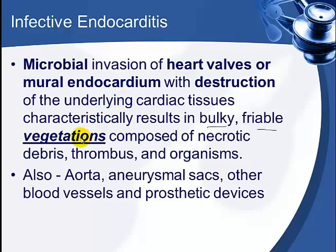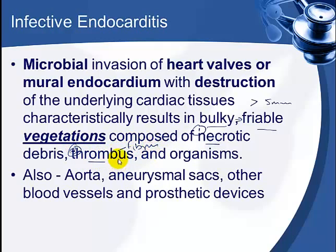Along with destruction, they lead to formation of big, bulky, friable vegetations. When we say bulky, they are generally more than five millimeters in diameter. If a vegetation is more than five millimeters, it is more likely to be infective. These bulky vegetations are friable and mainly composed of necrotic debris, thrombotic material — meaning fibrin and platelets — and of course, organisms.